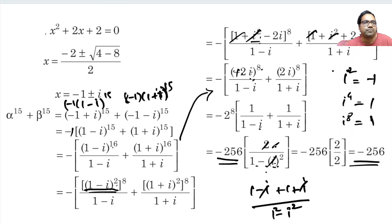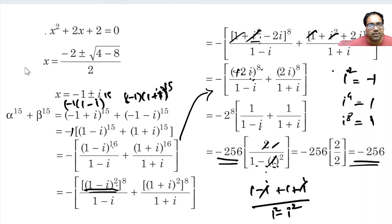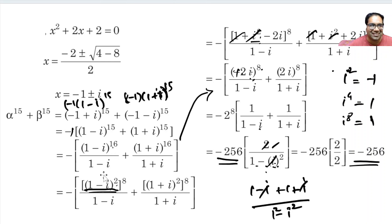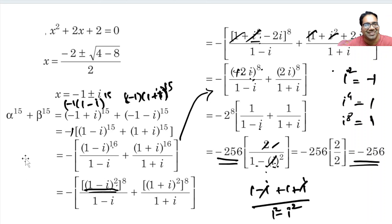Very simple problem. The only trick here is to understand that the roots are complex and do basic algebraic manipulation of complex numbers. (1 + i) whole power 16 is very easy to handle — that is why we converted the power 15 form into the power 16 form, and then applied the basic (a + b) whole squared formula. Thank you guys.